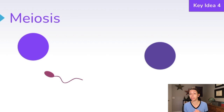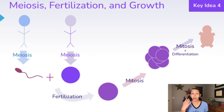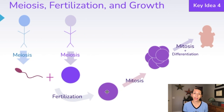In humans, both a biological male and a biological female will need to undergo meiosis in order to produce eggs and sperm. Then one egg cell and one sperm cell will combine in fertilization. After that, that fertilized egg will divide and make copies of itself through mitosis as the embryo starts to grow.